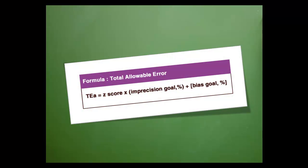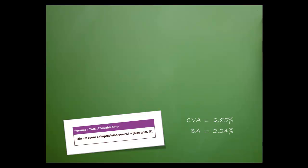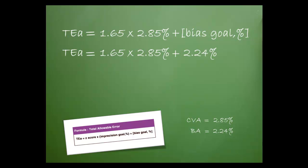Now that we understand all the components, let's practice calculating a TEA for serum glucose. Let's move our formula down into the corner, just in case we need it. These are our values for our imprecision goal percent CVA and our bias goal percent BA. We've chosen a z-score of 1.65 because we want to include 95% of the values within our target limits. Let's begin by copying down our formula and then substituting in the values. We multiply the z-score by the CVA and then add the BA. The TEA turns out to be 6.94%.